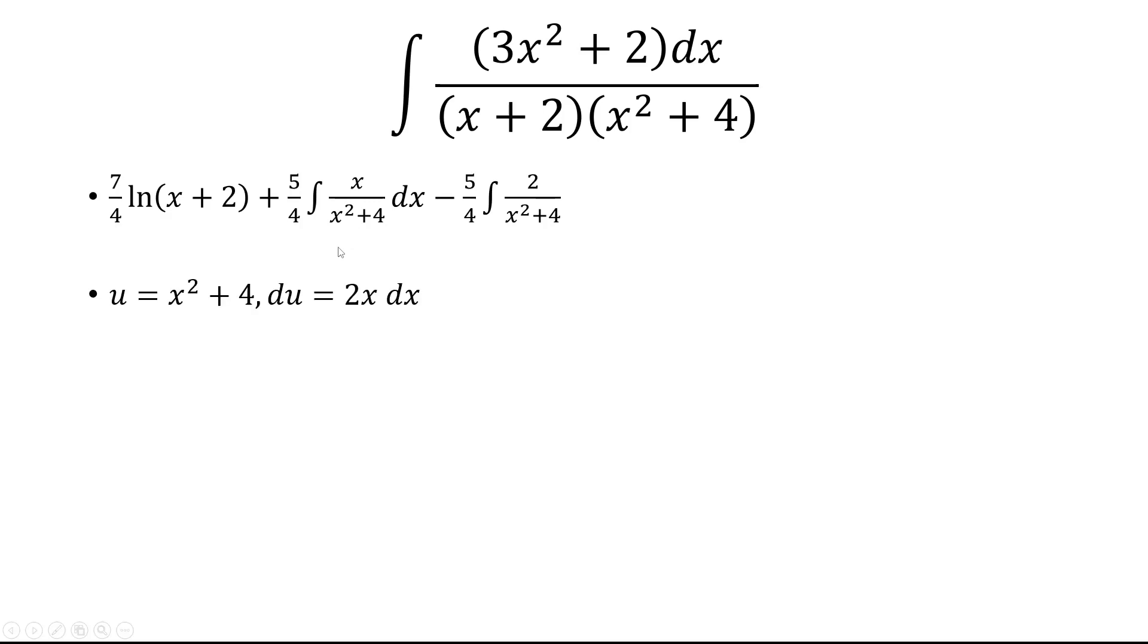And the first integral, we're going to use u substitution, let u equal x squared plus 4. So du is 2x dx, and x dx will just be 1 half du. So 5 fourths times 1 half is 5 eighths.